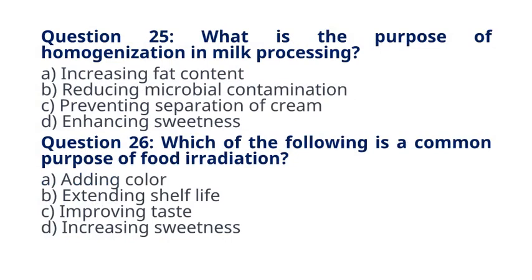Question 25. What is the purpose of homogenization in milk processing? A. Increasing fat content. B. Reducing microbial contamination. C. Preventing separation of cream. D. Enhancing sweetness. The correct answer to question 25 is option C. Preventing separation of cream. Explanation. Homogenization is a process that breaks down fat globules in milk, preventing the separation of cream and creating a uniform texture.